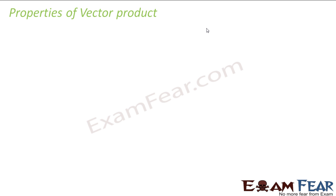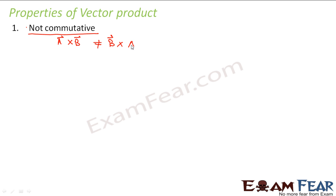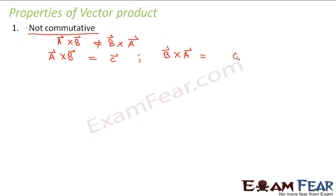Let us now look at some properties of vector product. The first property is that vector product is not commutative, meaning a×b is not equal to b×a. If a×b = c, then b×a = −c. The magnitude remains the same but the direction is reversed — as we saw, a×b gives the thumb pointing upward while b×a gives it pointing downward. Therefore it is not commutative.